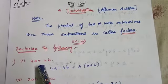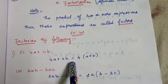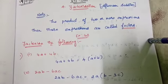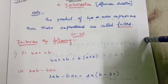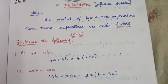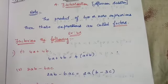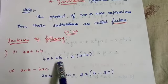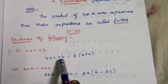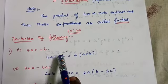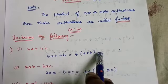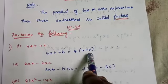Let's go straight to Exercise 4a. The first method is very simple: take out the common factor. Common numbers and common variables are taken out, and the remaining part forms one of the factors. For example, in 4a + 4b, both terms have 4 as common — take out 4, and the remaining is a + b. So the factors are 4 and (a + b).